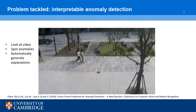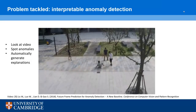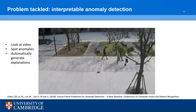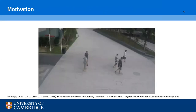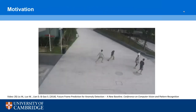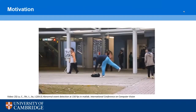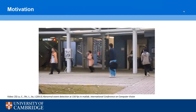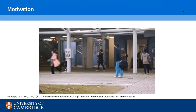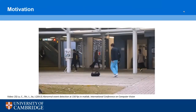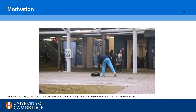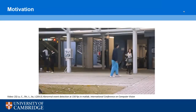For example, in a video like this, we would like to spot anomalous frames and explain that they are due to people pushing each other. Other examples of anomalies can include people fighting, people running, picking up bags, throwing bags, or others such as leaving a bag unattended in a train station or a car driving on a pavement.